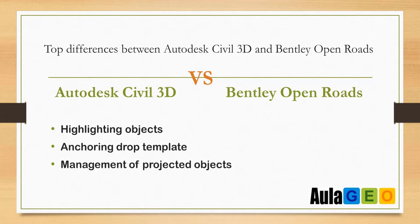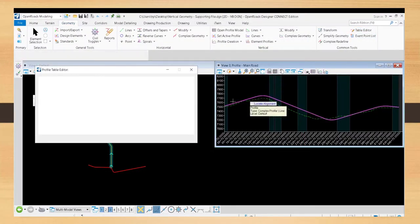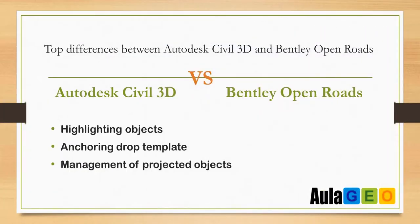Sable 3D has good management and administration of projected objects in views or section views, in which you can see a table with the elements that exist, change the style, and so on. In OpenRoads, if you project entities to the profile model or intersection points, you have no way to get a table to see how many there are.